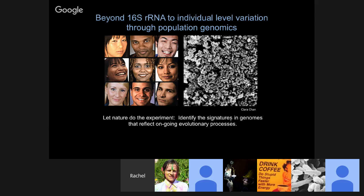In nature, do the experiment — identifying signatures in genomes that reflect these ongoing processes of evolution. The basic approach is to characterize natural variation on the genome scale, not just using 16S but using the entire genome, and then apply population genomic rules to understand how that variation arose and is shaped by different factors in the environment.